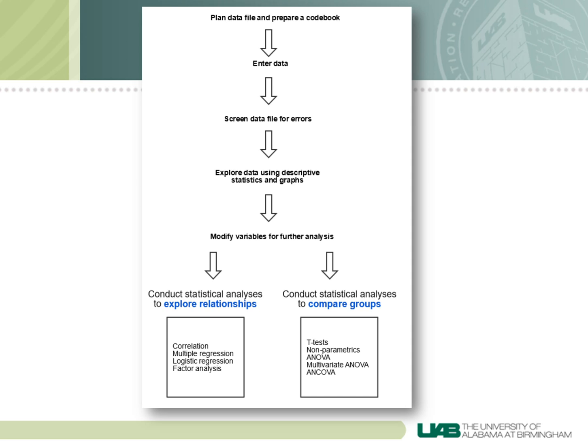This diagram shows the basic approach to analyzing data collected during a study. In the first video in this series, I discussed the top three steps, and I finished with how to analyze your data file for errors, looking to see if you have consistency in your data and looking for any missing data. In this lecture, we'll discuss what to do if you do find any missing data.